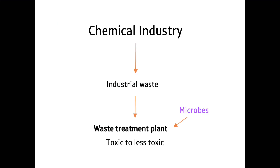Let's take an example: a chemical industry releases industrial waste containing various harmful chemicals. These chemicals are treated in a waste treatment plant where microbes are added. The microbes convert the toxic chemicals present in the industrial waste into less toxic form, and then this treated water is released into rivers or lakes.